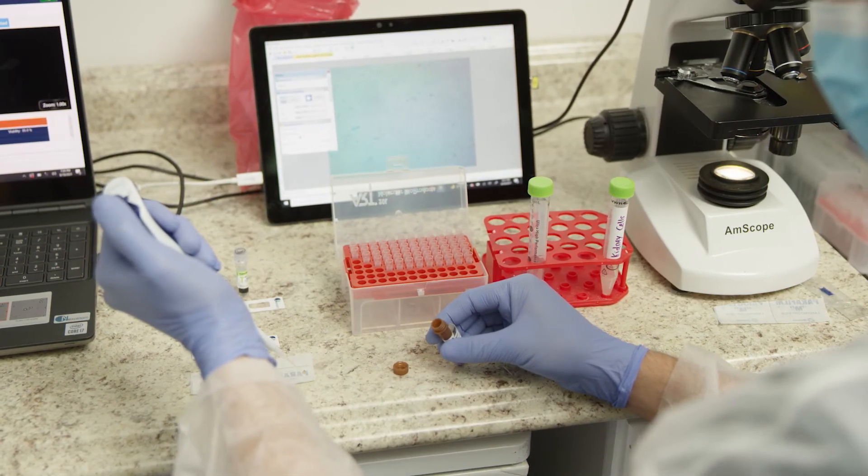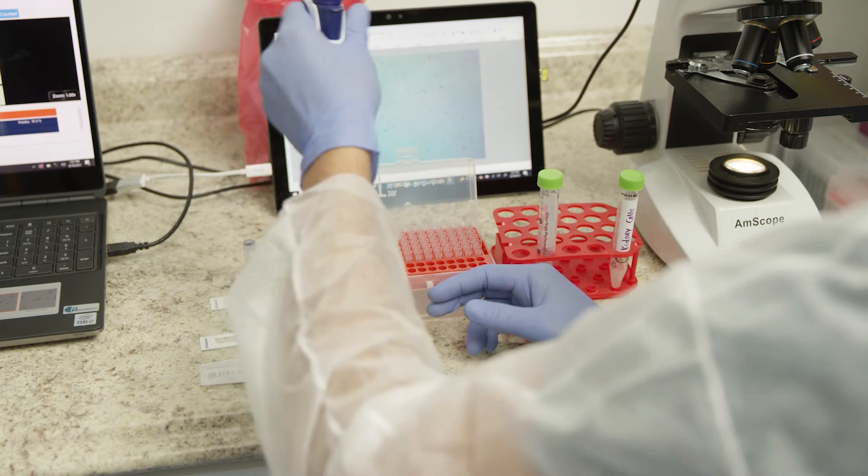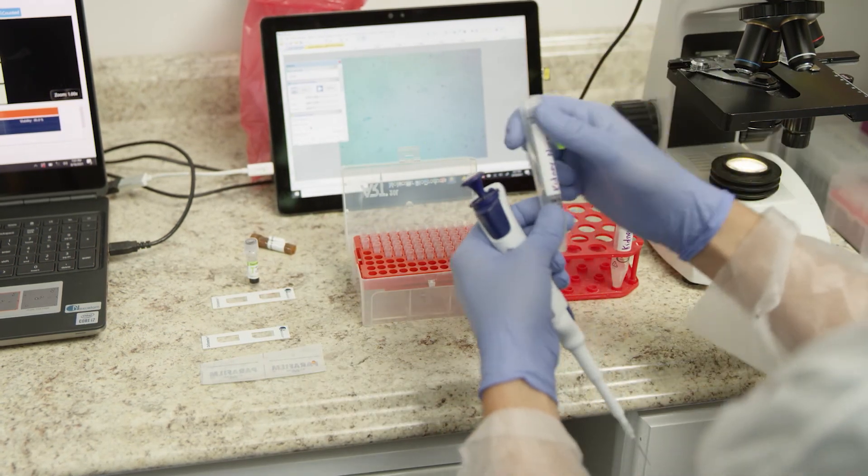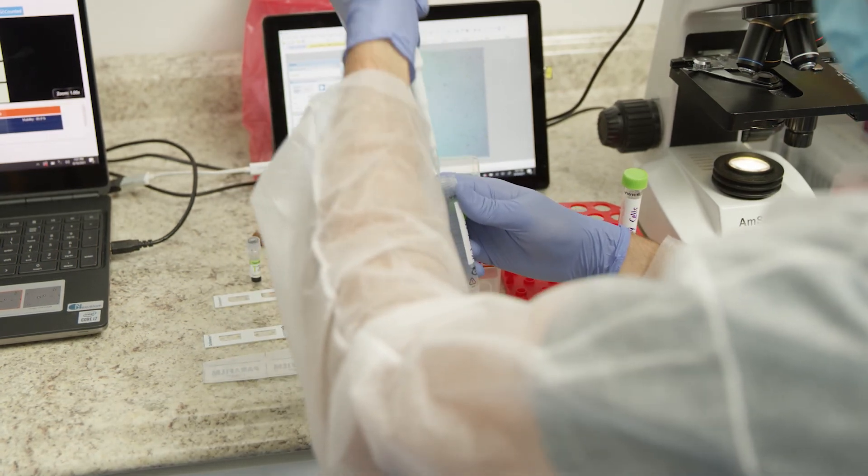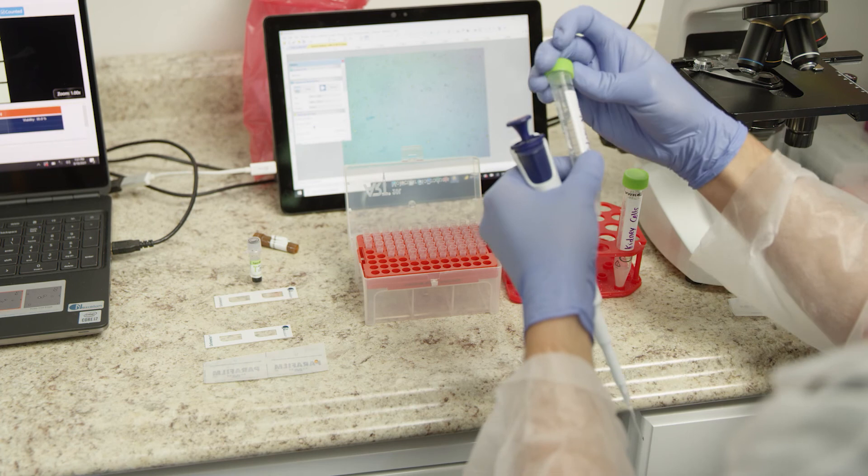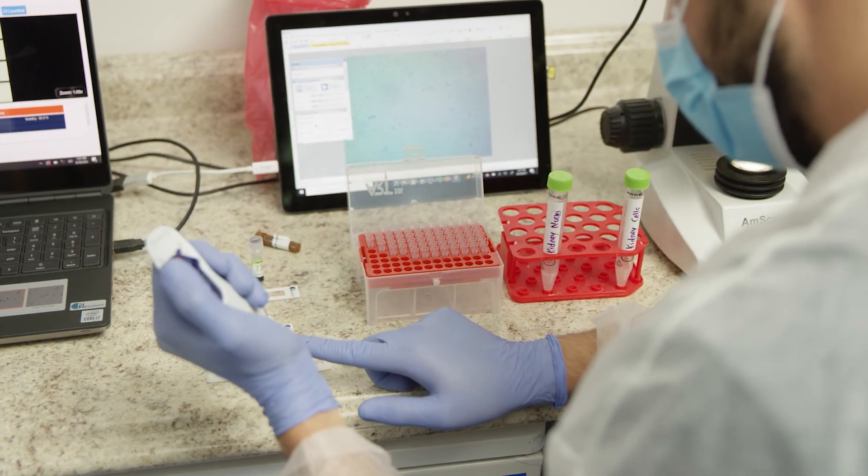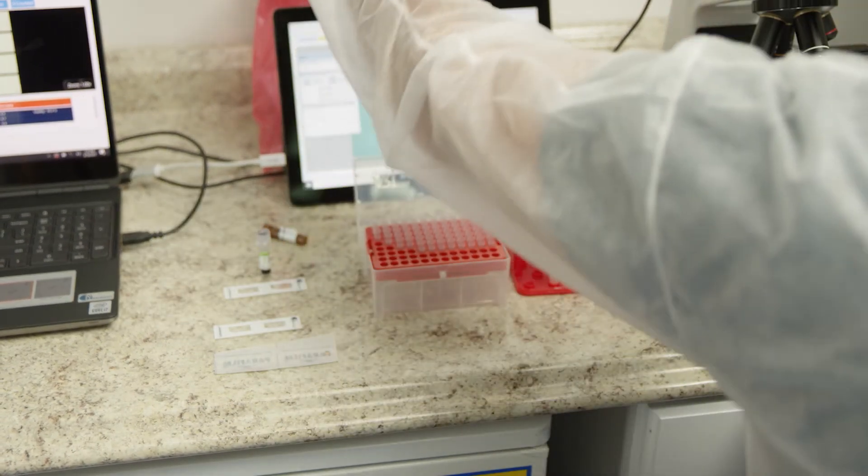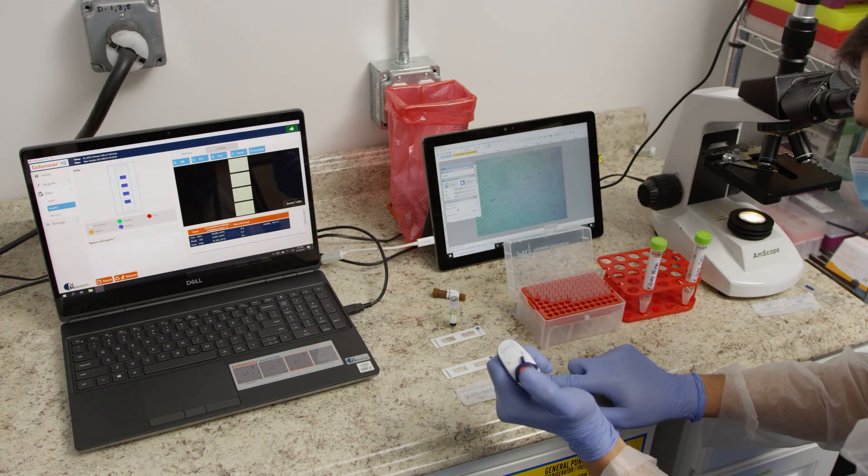For use of Trypan Blue, mix 20 microliters of Trypan Blue and 20 microliters of sample. Then add 10 microliters to each side of an analysis slide for counting.